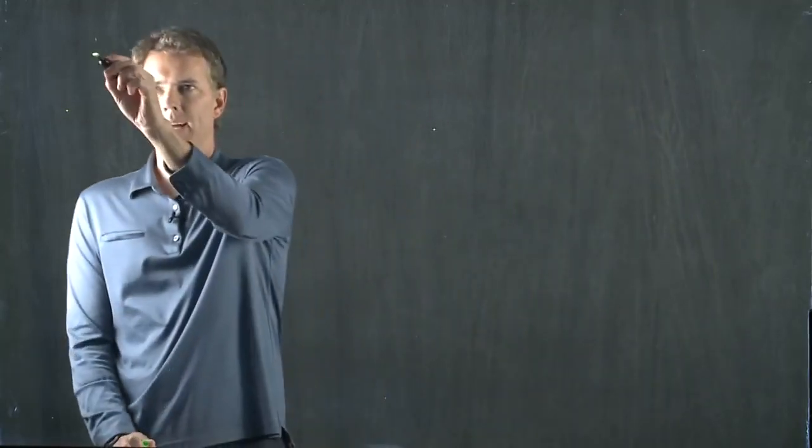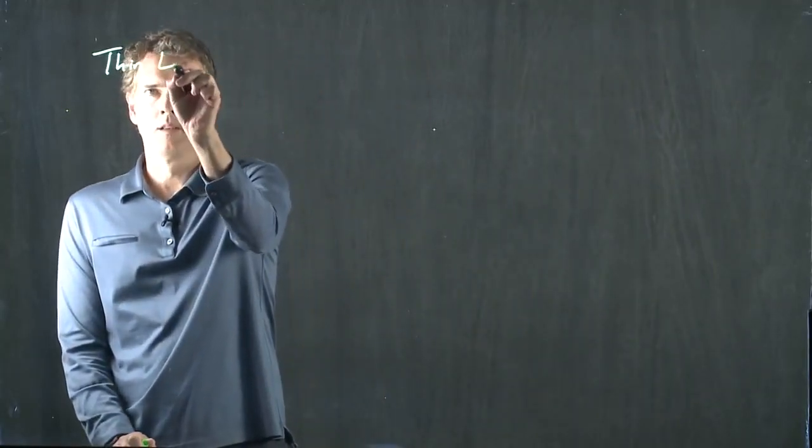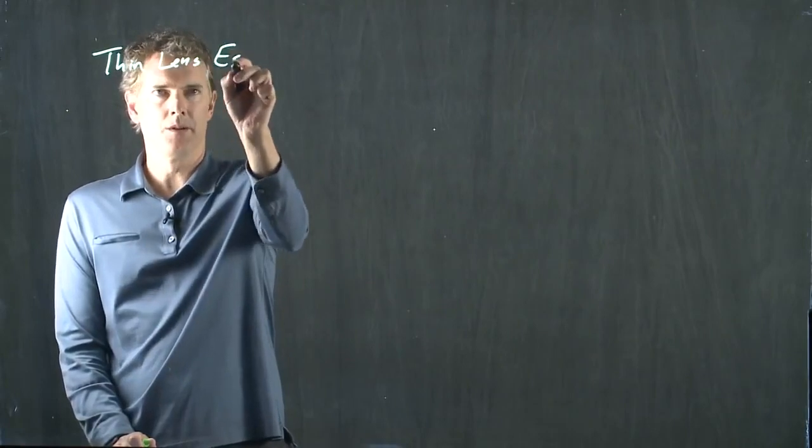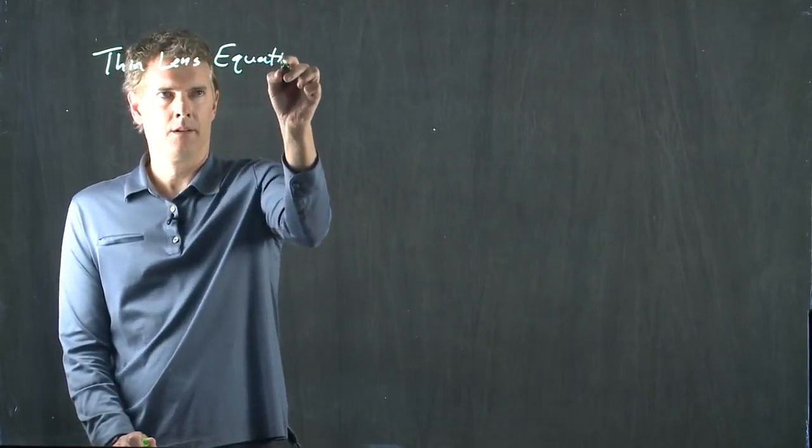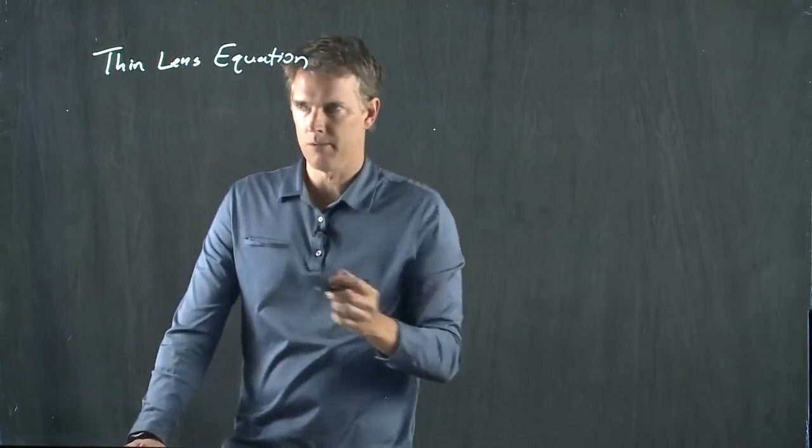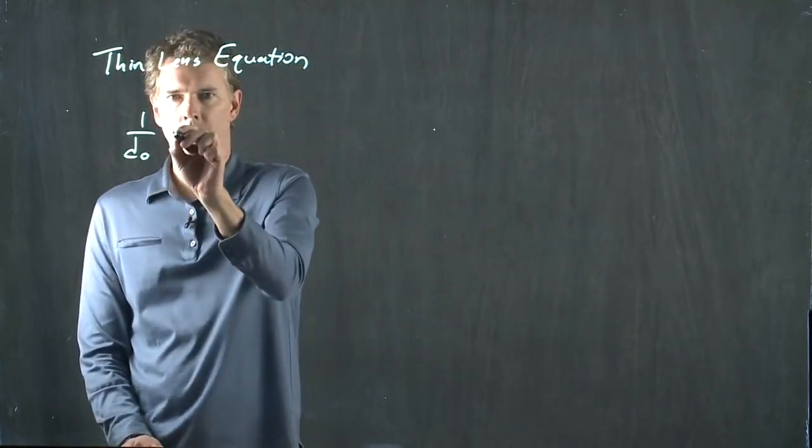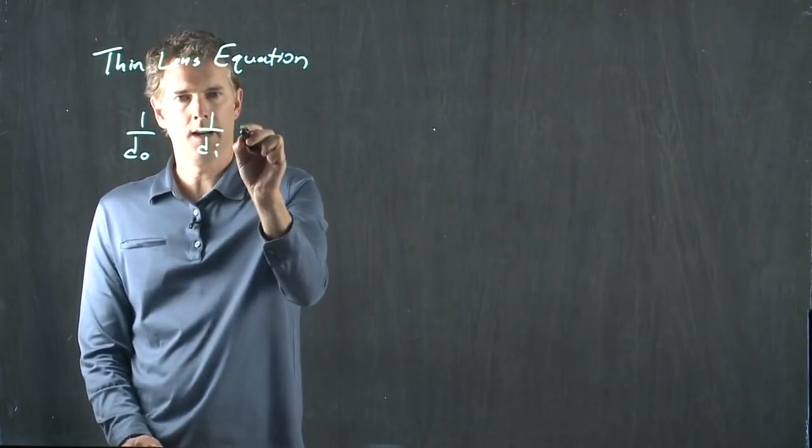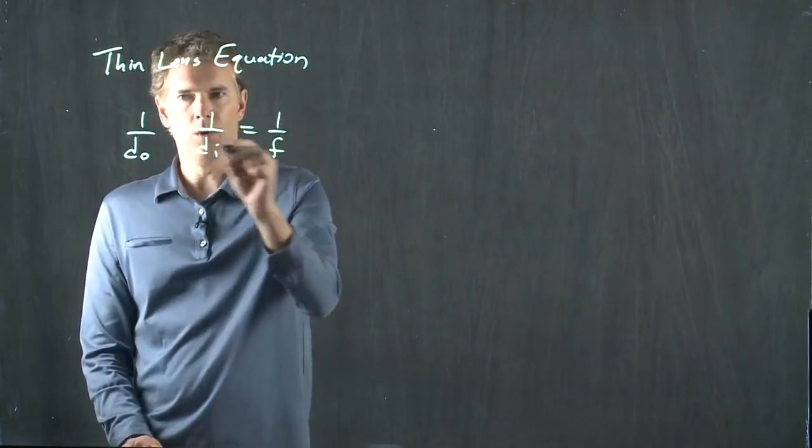The thin lens equation is exactly the same as the mirror equation. It's the following: 1 over DO plus 1 over DI equals 1 over F.